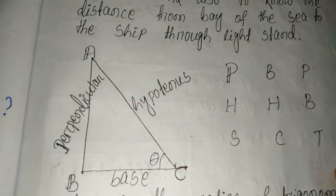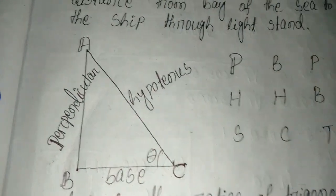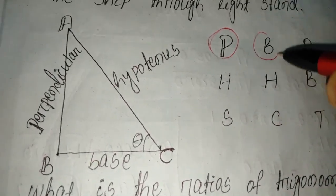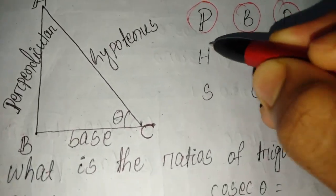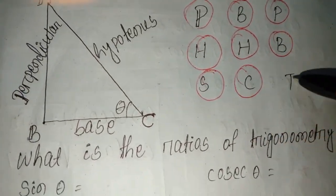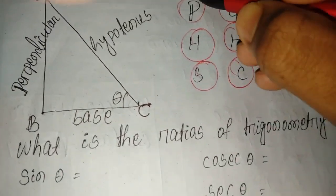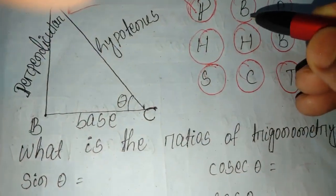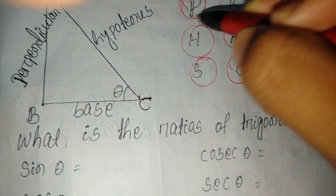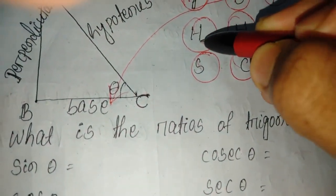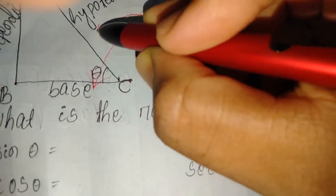This word is hard, so here is a Sanskrit mnemonic trick: Pandit Badri Prasad Hari Hari Bol Sona Chandi Tor. The meaning is: P for Pandit, P for Perpendicular; B for Badri, B for Base; H for Hari, H for Hypotenuse.